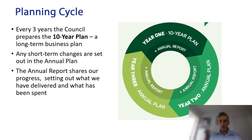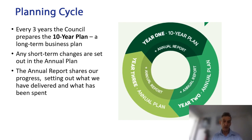In years two and three of the cycle we prepare an Annual Plan that really deals with any short-term changes, any variations from what we'd planned for the year concerned in the 10-year plan. The Annual Plan 2023-2024 is looking at the changes for that year. At the end of each year we prepare an Annual Report that shares our progress with the community — what we've delivered against the plan, what has been spent, what we're going to receive. It's an important accountability part of the cycle.